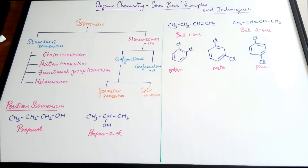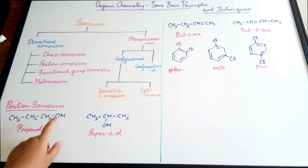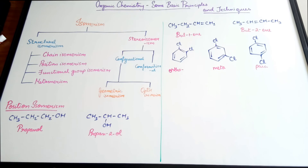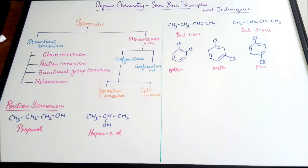The next type of isomerism is position isomerism. In this case, the compounds have the same molecular formula, but the position of the functional group is different. This functional group can be any of the functional groups studied, or it can also be a double or triple bond. For example, propan-1-ol and propan-2-ol: in propan-1-ol the alcohol group is at the first carbon, whereas in propan-2-ol it is at the second carbon. Similarly, but-1-ene and but-2-ene: the double bond is at the first carbon in one case and at the second carbon in the other.